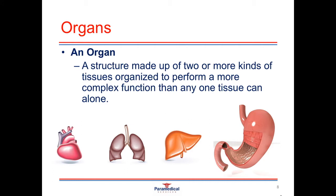An organ is a structure made up of two or more kinds of tissues, organized to perform a more complex function than any one tissue can alone. Examples of different types of organs include the heart, the lungs, the liver, and the stomach.